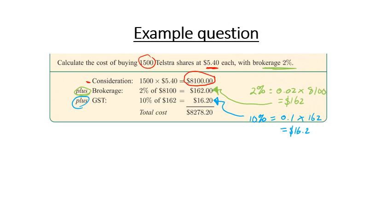And then we add it all together, and that gives us our total cost for buying the shares. So buying shares is not just buying the number of shares at the cost of each share. It's actually adding in a brokerage fee and a GST fee as well.